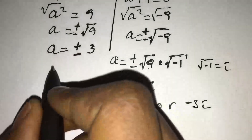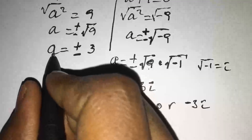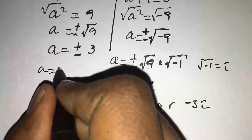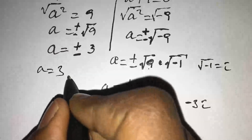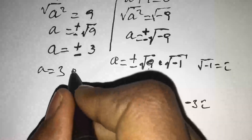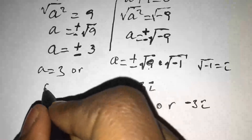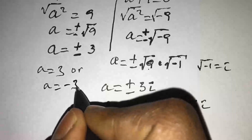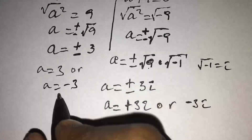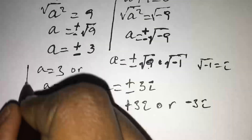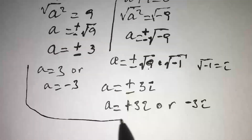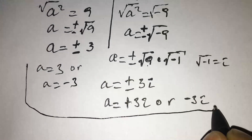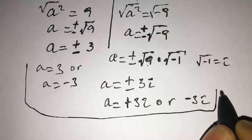So the complete set of roots of the equation is: A equals 3, A equals minus 3, A equals 3i, or A equals minus 3i.